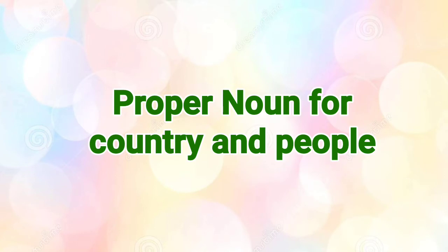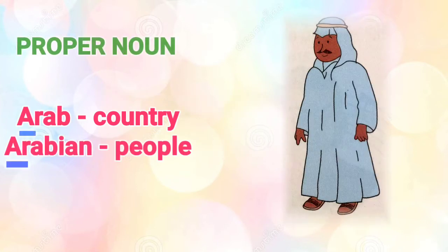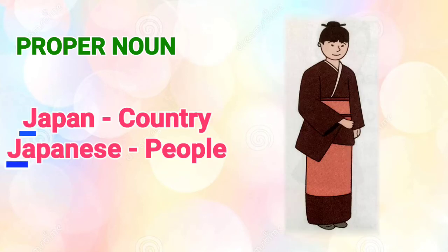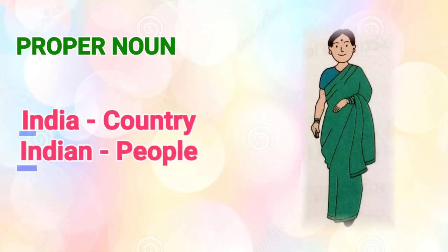In proper nouns, the names of countries and their people are also proper nouns. For example, in Arab, the people are called Arabian. Similarly, Japan is a proper noun because it's the name of a country, and the people there are called Japanese — also a proper noun because it starts with a capital J. Similarly, India is a country, so India starts with capital I, and Indian is also capital. They are both proper nouns — the people living there are Indian and the place is India.